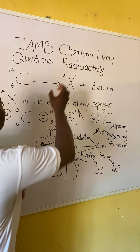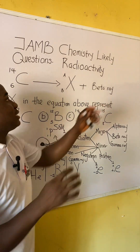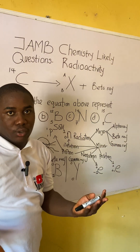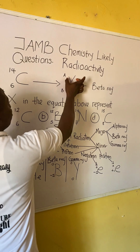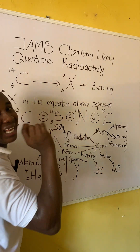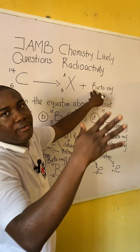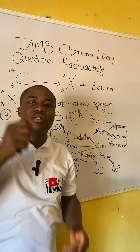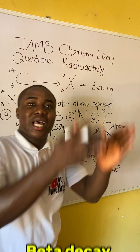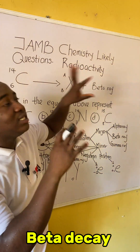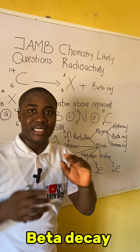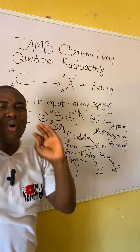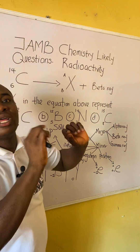Now let's get back to the question. They gave us carbon-14, which was disintegrated to get an unknown radioactive substance, and there was an emission of beta ray. This reaction is called beta decay. To identify the type of nuclear reaction: if beta ray is emitted it is beta decay, if alpha ray is emitted it is alpha decay, and if gamma ray is emitted it would be called gamma decay.